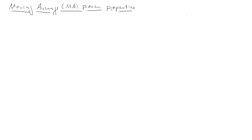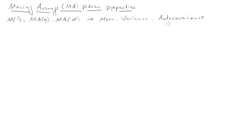On this clip, we're going to talk about properties of moving average processes, short MA. In particular, we're going to look at MA1, MAQ, and MA infinity processes, and we're going to look at their mean, variance, and autocovariance. The autocovariance is important because that will lead to the autocorrelation, and we use these to describe univariate processes.